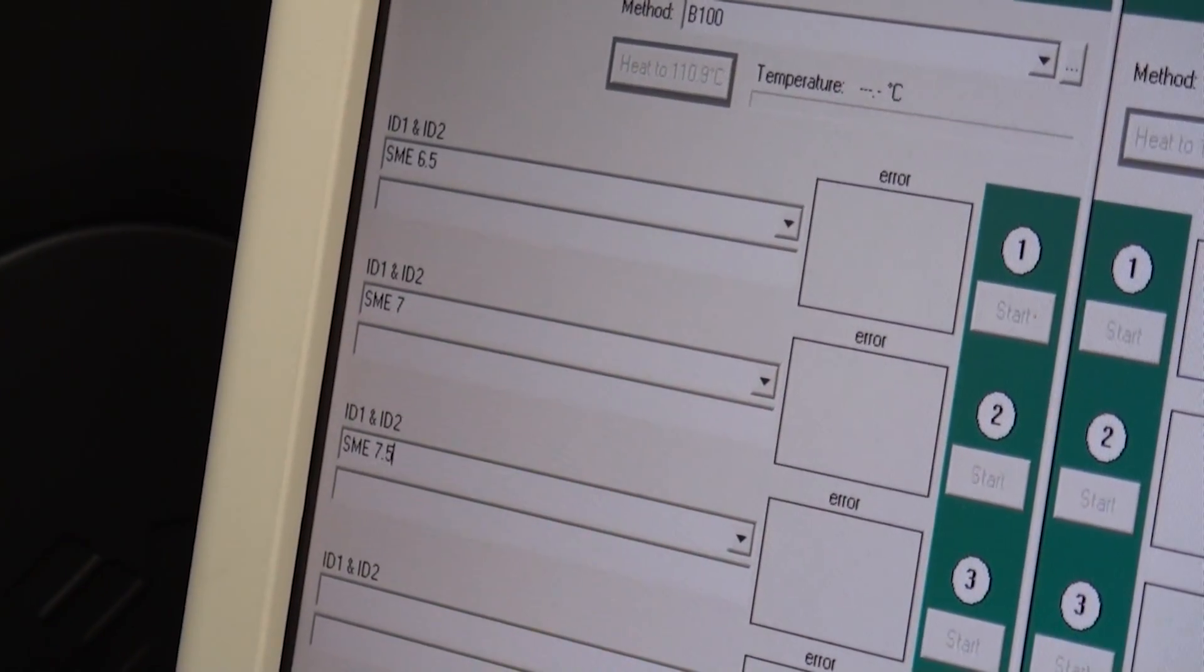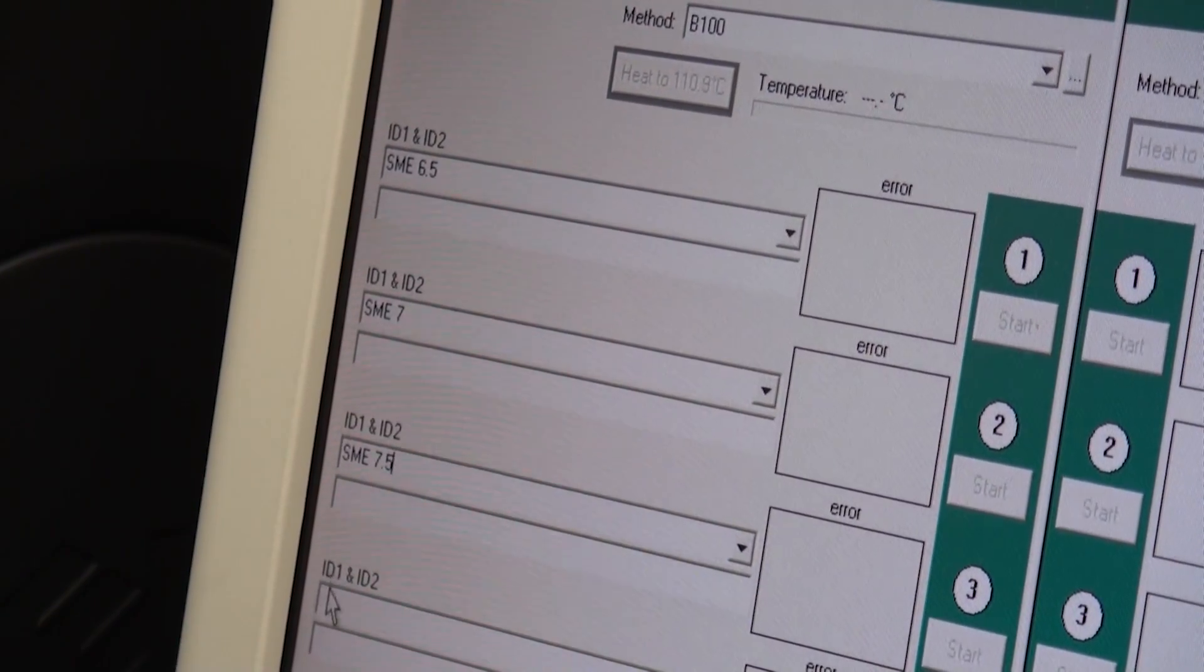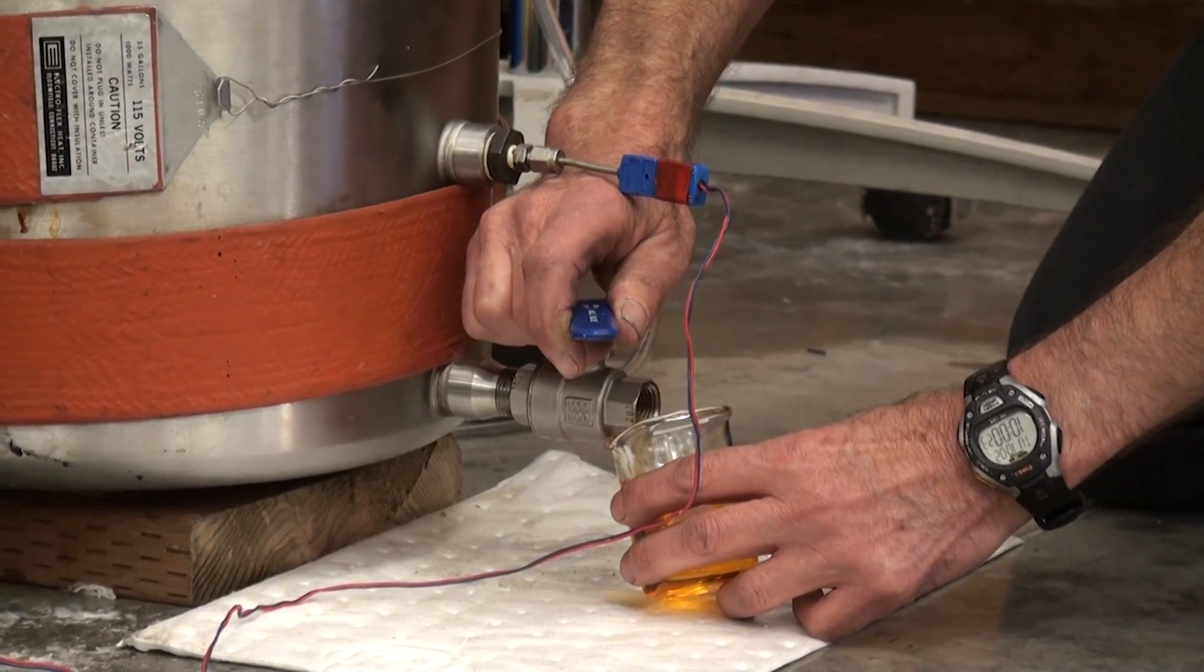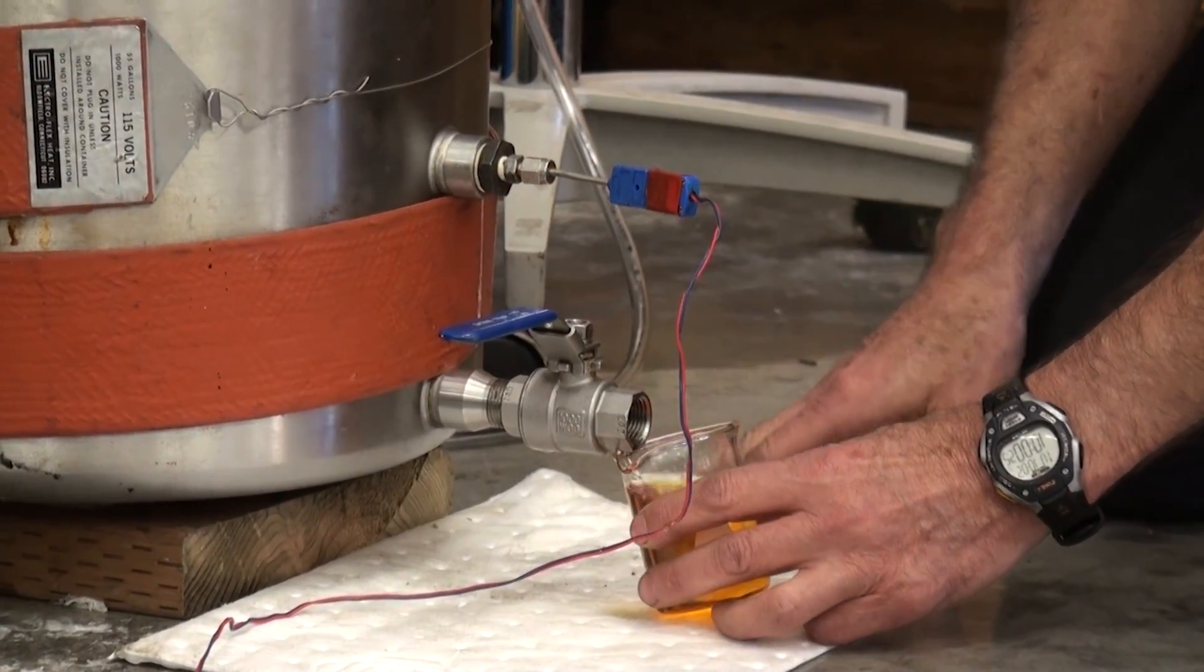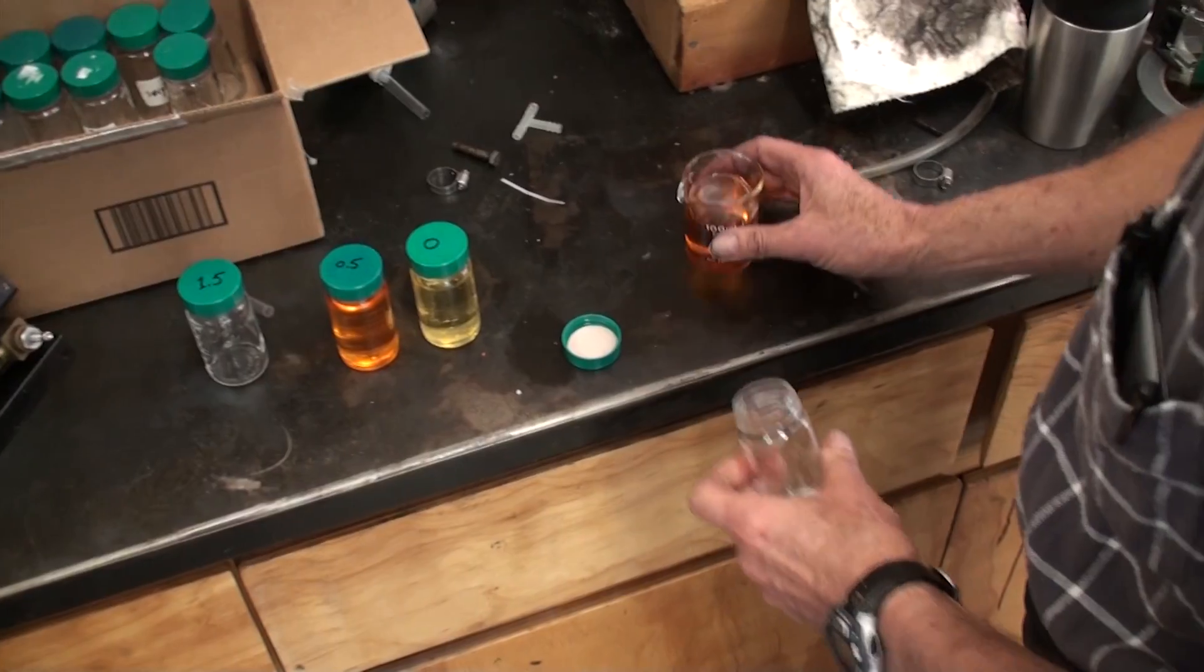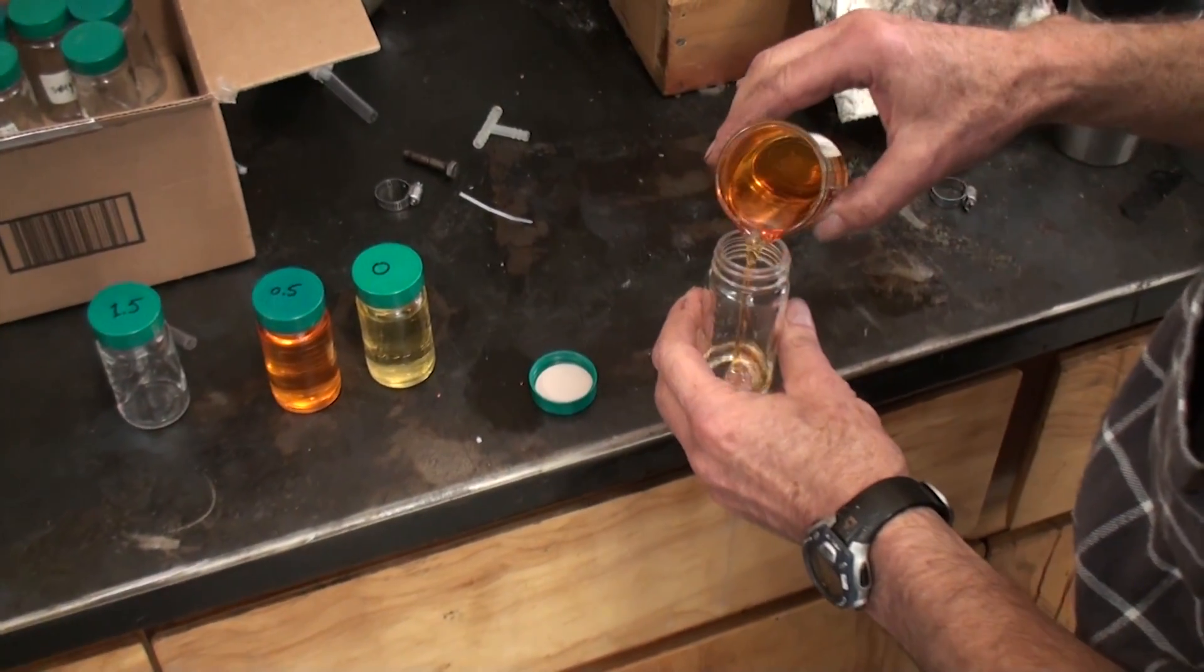The actual spec is three hours, and if you have biodiesel that's fresh and you get at least three hours out of your rancimat reading, then you're pretty good to go with your fuel stored for at least six months, probably longer.